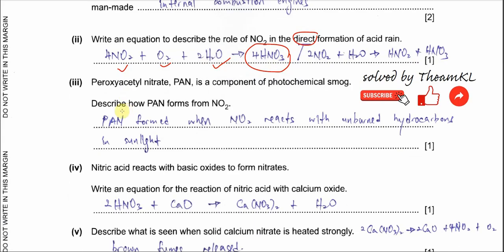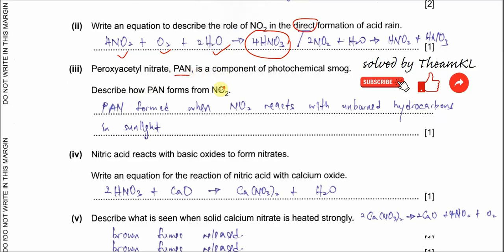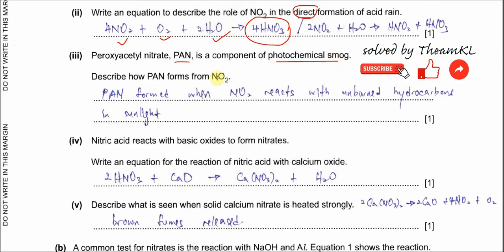Now we have peroxyacetyl nitrate, or PAN, which is a component of photochemical smog. Describe how PAN forms from nitrogen dioxide. It combines with unburned hydrocarbons from the car engine. When there are unburned hydrocarbons and NO2 together with UV or sunlight, it can form PAN.